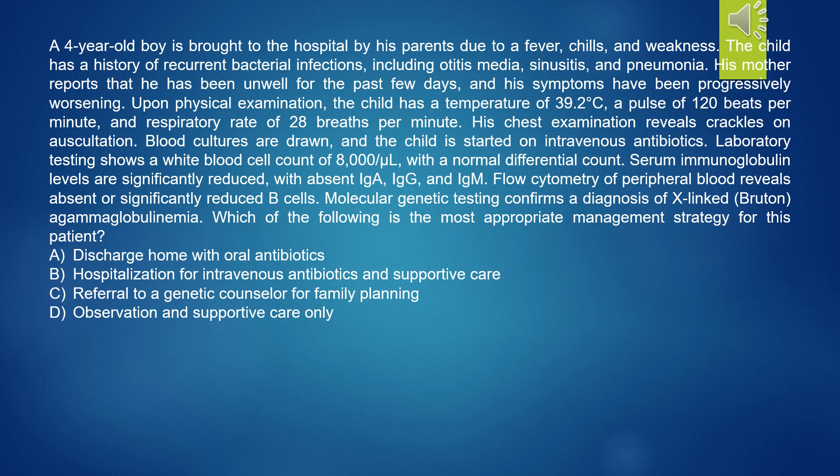A 4-year-old boy is brought to the hospital with fever, chills, and weakness. He has a history of recurrent bacterial infections including otitis media, sinusitis, and pneumonia, with progressively worsening symptoms. Physical examination reveals a temperature of 39.2°C, pulse of 120 bpm, respiratory rate of 28 breaths per minute, and crackles on auscultation. Laboratory testing shows WBC of 8,000 per microliter with normal differential, significantly reduced serum immunoglobulin levels, and absent or significantly reduced B-cells on flow cytometry. Molecular genetic testing confirms X-linked Bruton agammaglobulinemia. Which of the following is the most appropriate management strategy?